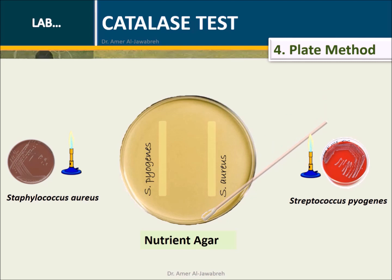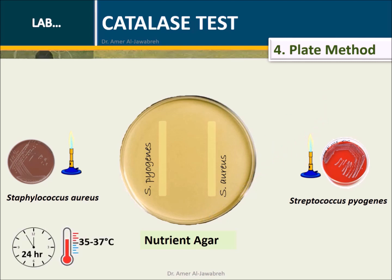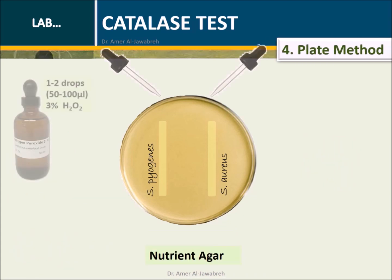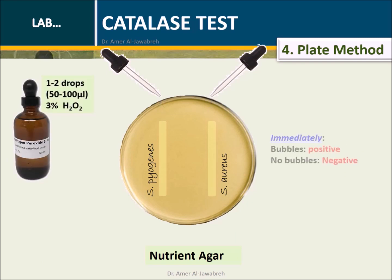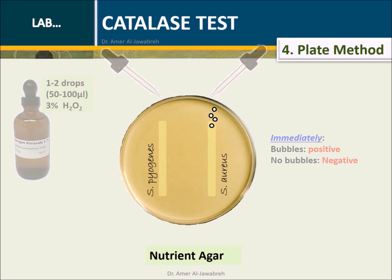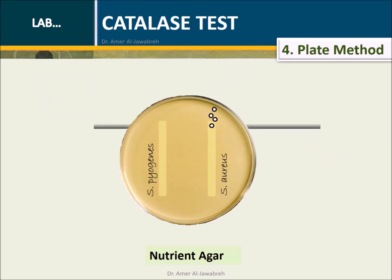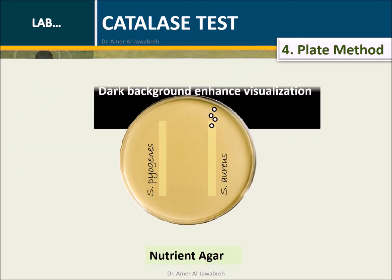Draw a straight line — one for S. aureus and one for S. pyogenes. Incubate for 24 hours at 35 to 37 degrees Celsius. At one end of the growth line, add one to two drops of three percent hydrogen peroxide. Observe immediately for oxygen bubbles. This is the least common method, as components of the medium may interfere with the test.